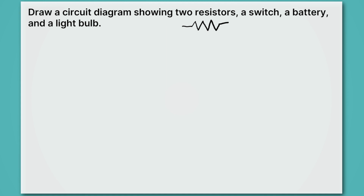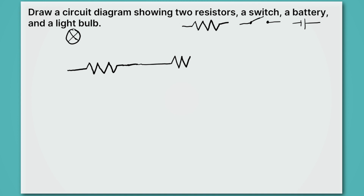For a switch, we're going to have a wire with a circle on one side, and a wire and a circle on the other side, with a line that goes up on one side that can close to connect it. A battery looks like this, where one side is bigger than the other. And a light bulb is a circle with an X through it. Of course you'll see other slight variations on these symbols, but here are the ones we're going to be using in this lesson.